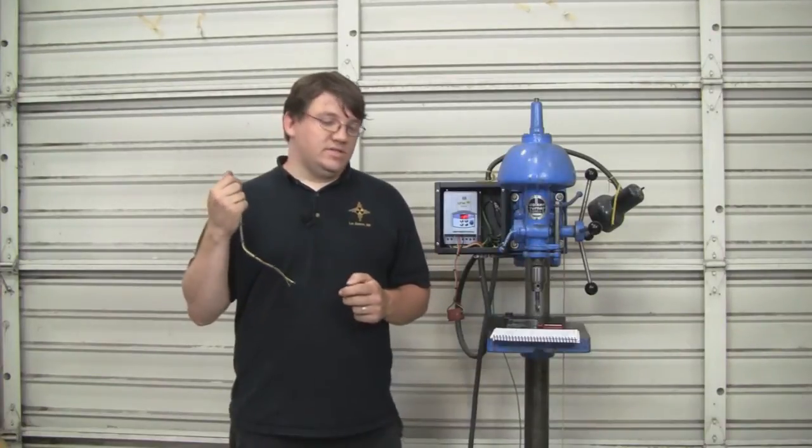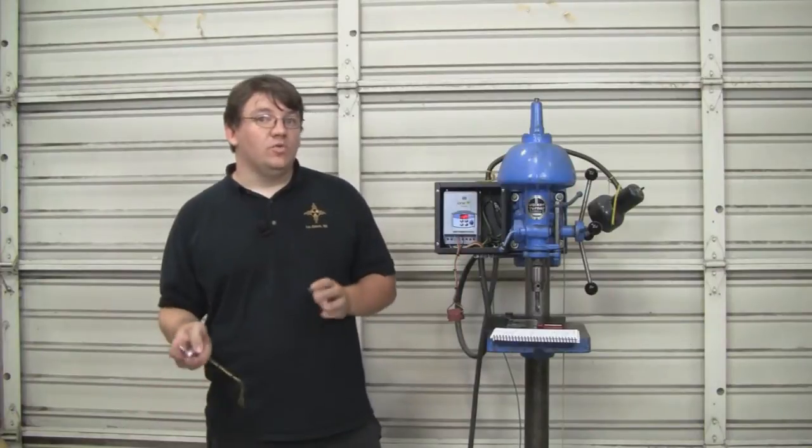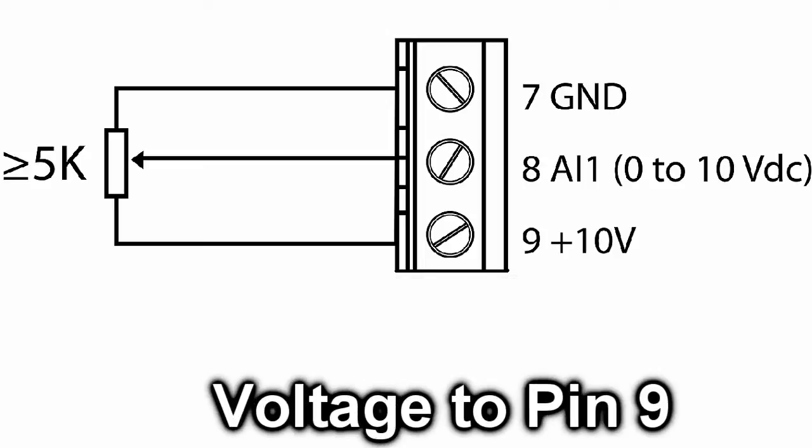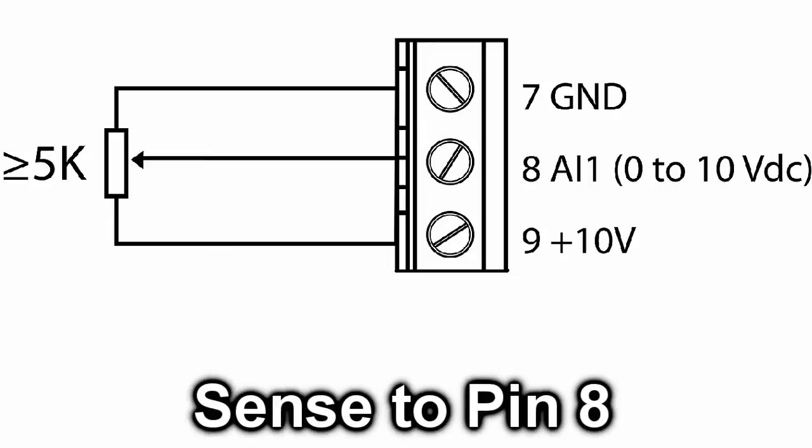Now, on the CFW10, ground is going to be hooked to pin 7, voltage will be hooked up to pin 9, and then sense, which is the varying resistance across the two, is going to be on pin 8.